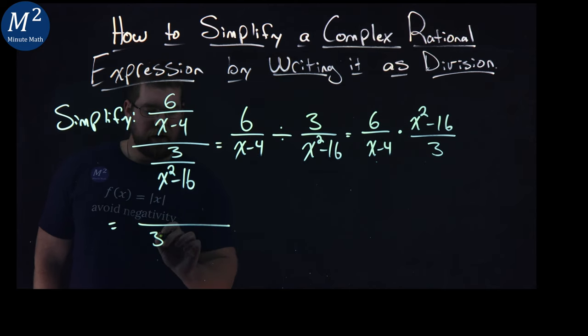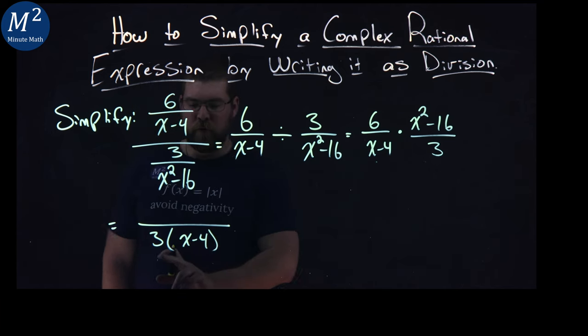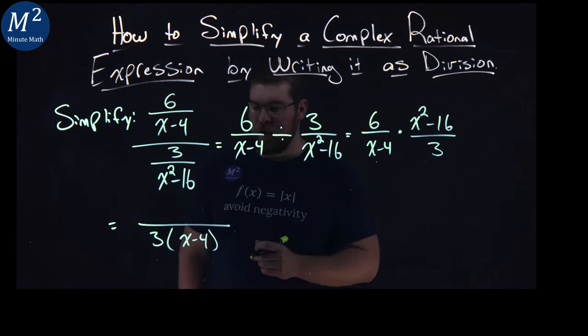So, big fraction, I have a 3 down here, I have an x minus 4 in the denominator. We can see that 3 times x minus 4. I'm going to leave it separate, though, for the moment, because it might cancel out.